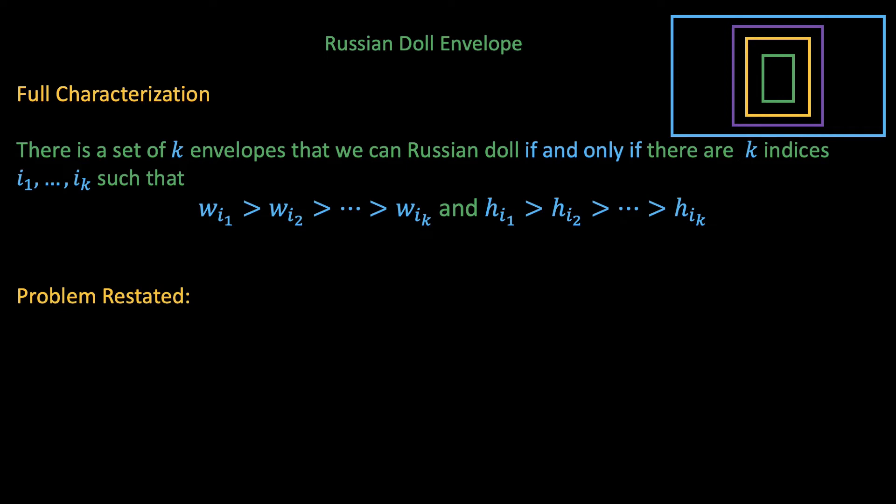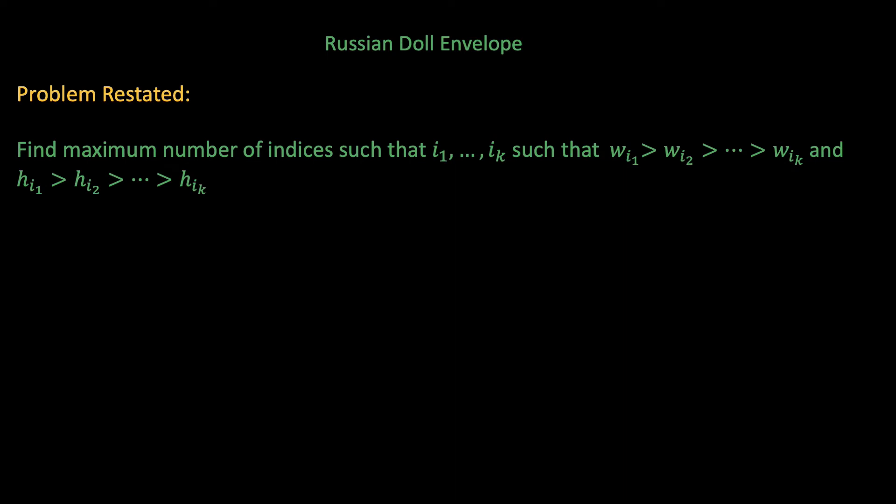With this characterization, we can now restate the problem. The problem now becomes find the maximum number of indices i1 to ik such that their width and heights are increasing. Now here's an idea. Instead of worrying about the sorted order of both the width and the height of the envelope, let's just for now initially sort all the envelopes in descending order of width. So the original input becomes something like this.